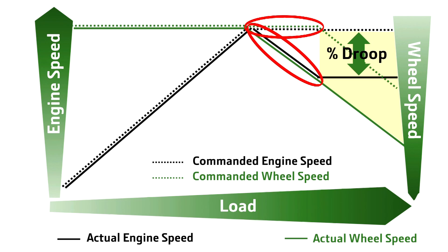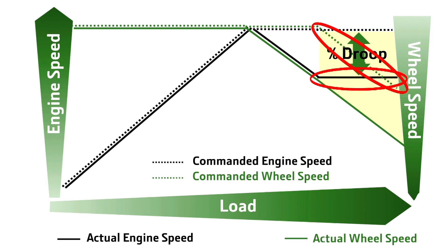At this point, if the load increases even more, the engine will remain commanded to maximum speed. But the actual engine speed is decreasing because it is being lugged down by the load. The transmission will not shift down anymore, which means we are also losing wheel speed. When the engine is lugged down to the droop setting, the transmission will begin to downshift, sacrificing ground speed to make sure the engine speed does not decrease any further.